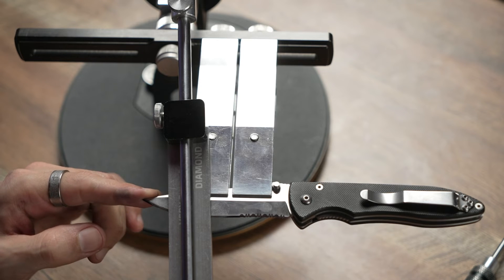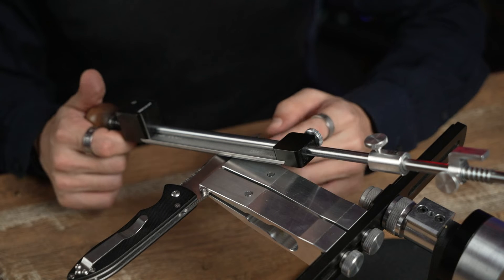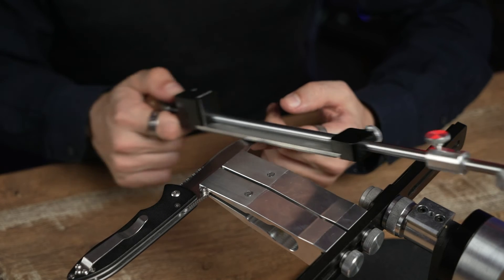But our final goal is the symmetrical bevel and to do it we have to check the width of the bevel on both sides.